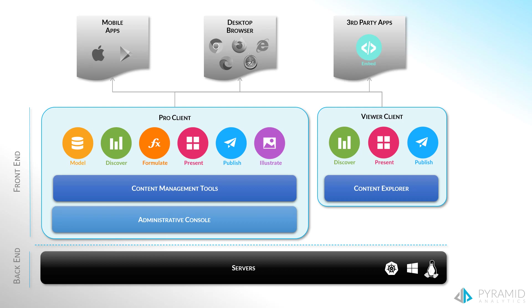To better understand how all the pieces fit together, let's start by reviewing the flow in the pro client. All the apps in the pro client fit together like the pieces of a tight jigsaw puzzle, giving users access to the entire data and analytic pipeline. The following explains how they all connect, even though there are scenarios where they are not always used or required.